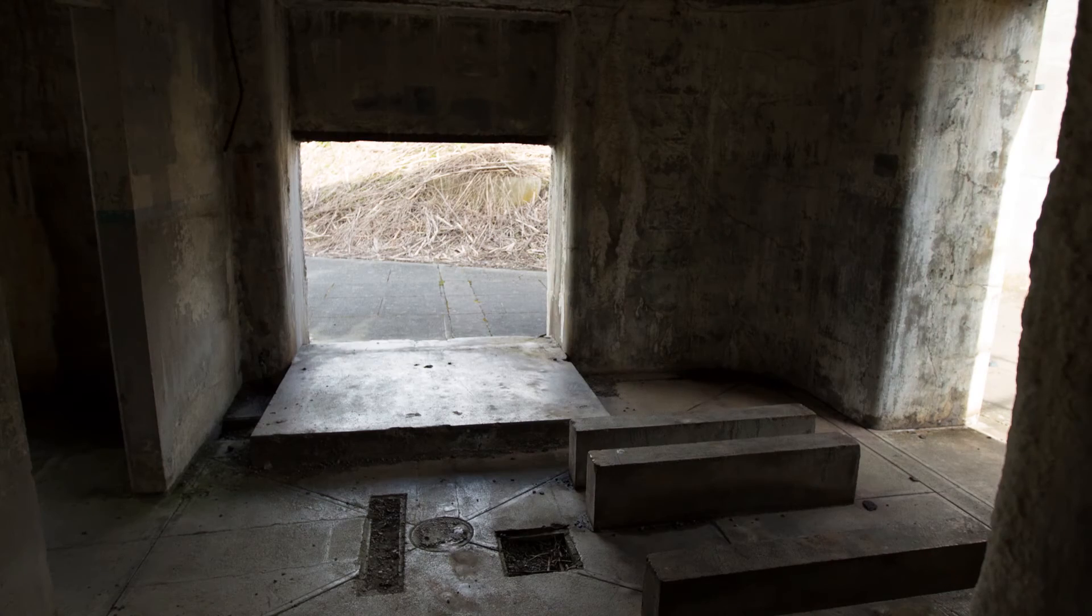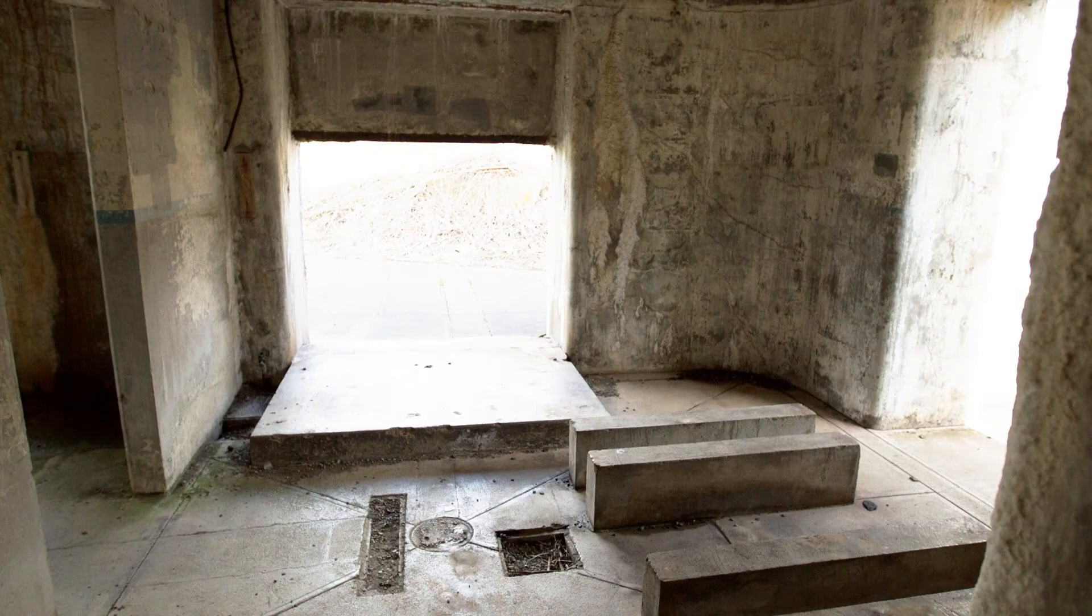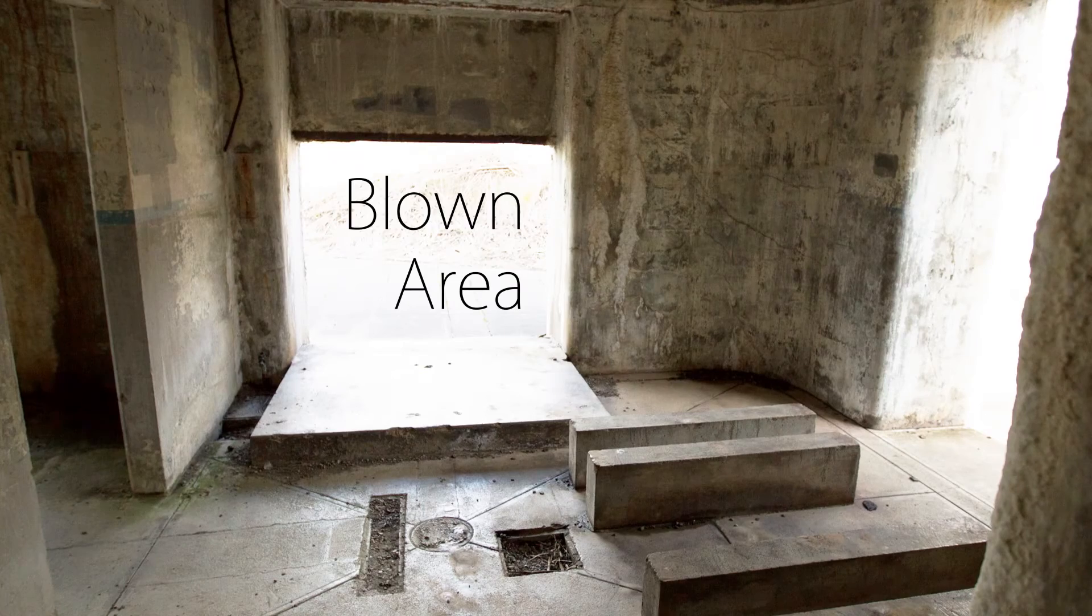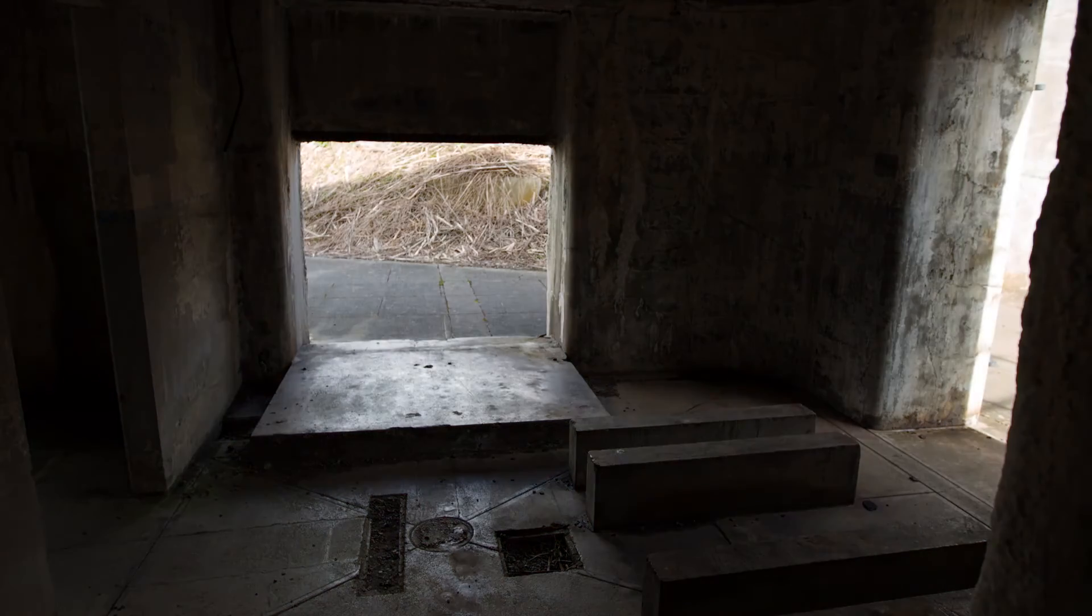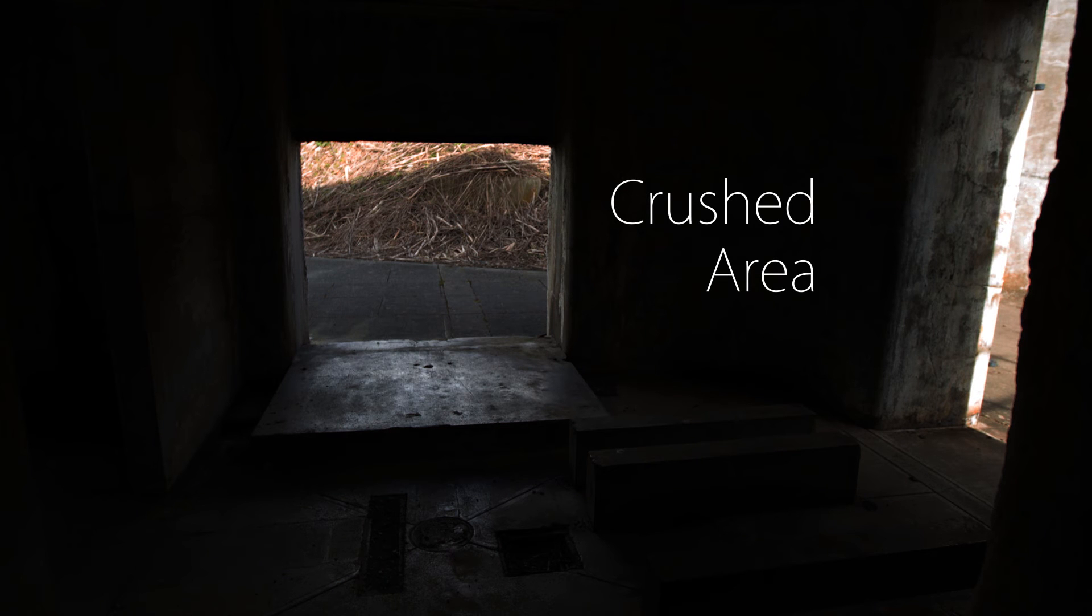Overexposed spots lose their information and simply become white. These are referred to as blown areas. Underexposed areas lose their information and simply appear black. These parts are referred to as crushed.